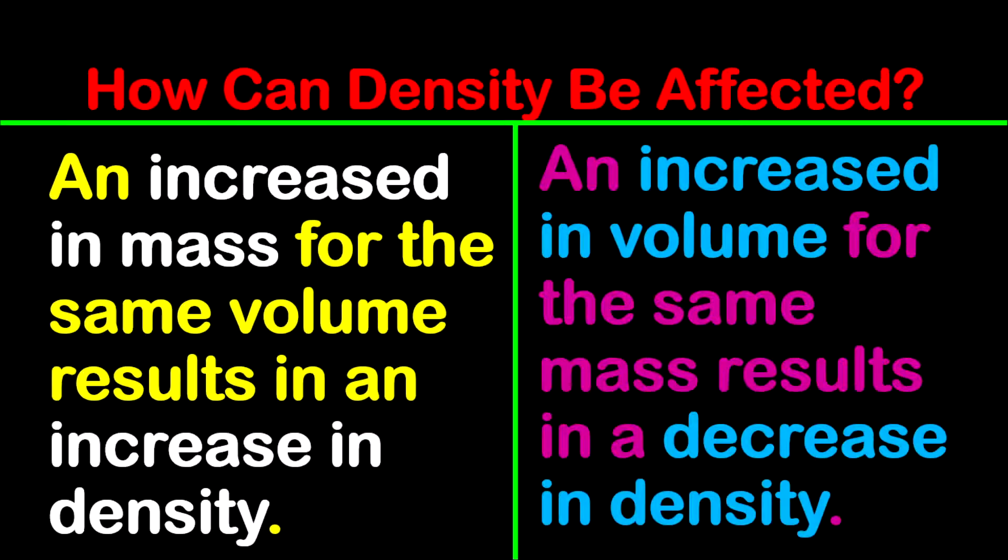So let's jump into some more details here. And what I want to look at is how can density be affected? Density can be affected in two ways, a change in mass or a change in volume. So if there is an increase in mass for the same volume, then it results in an increase in density. What this means is that mass and density are proportional. If there's an increase in volume for the same mass, it results in a decrease in density. What this means is that volume and density are inversely related.